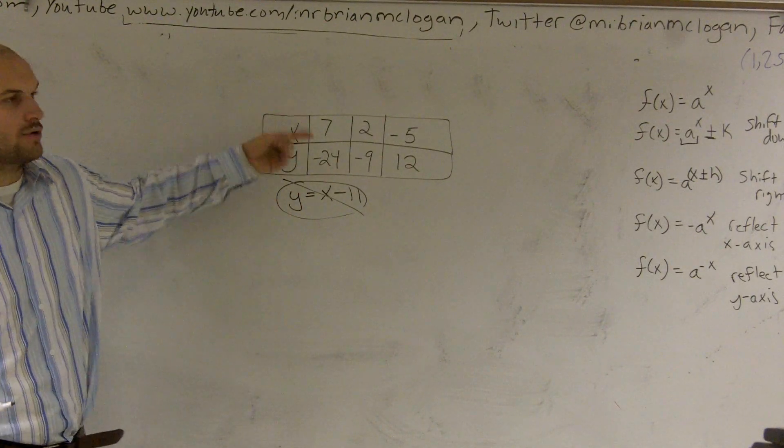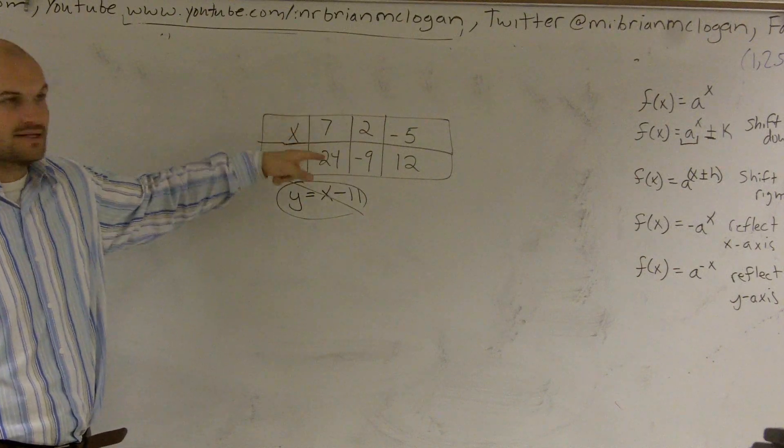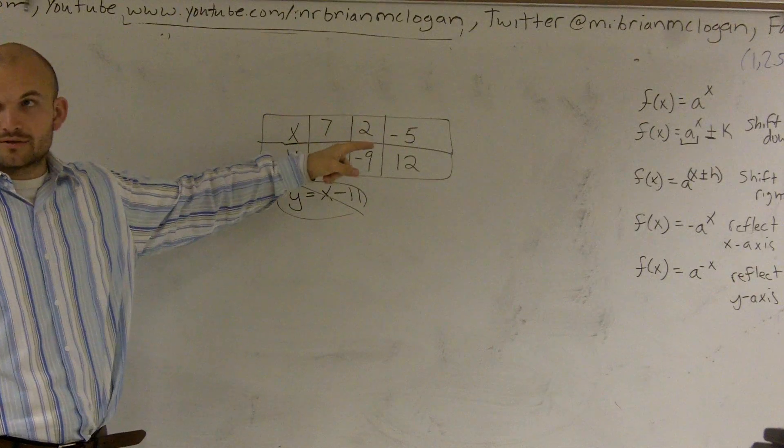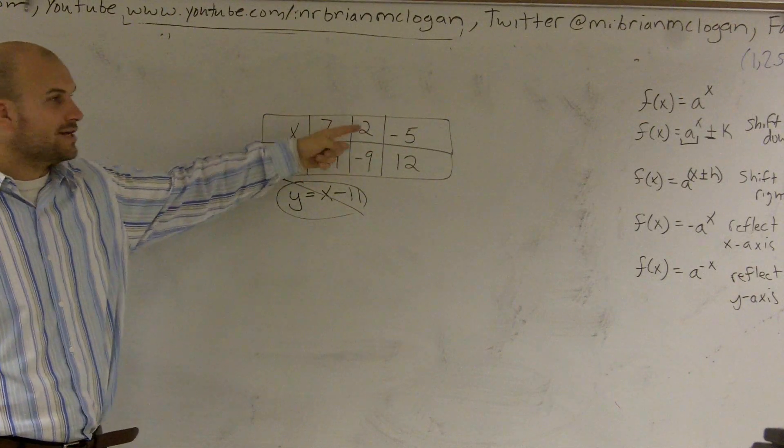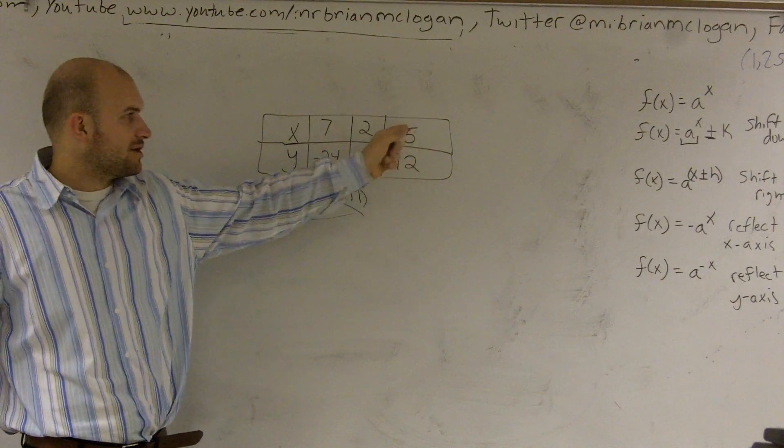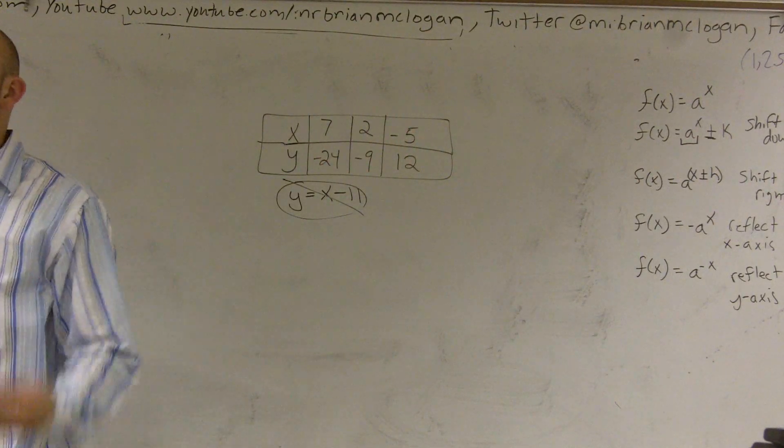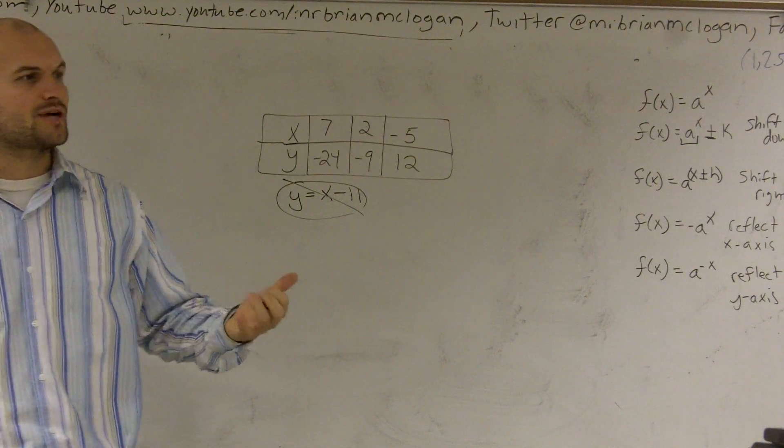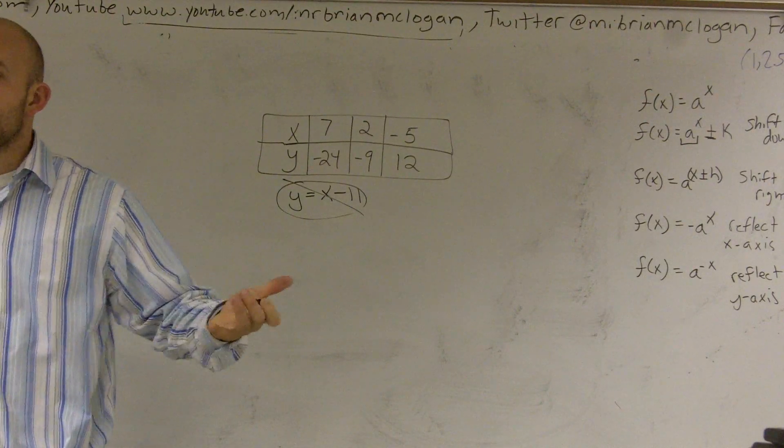And I can't multiply. There's no integer I can multiply 7 by to give me negative 24. There's no integer I can multiply 2 by to give me 9, nor integer I can multiply negative 5 by to give me 12. So what I'm going to look to, rather than trying to figure out a decimal or something, what I'm going to try to do is I'm going to see what about a combination of the two.